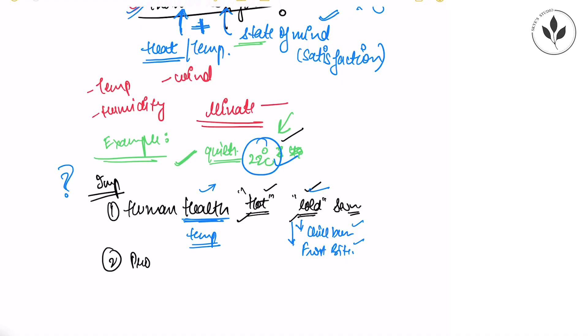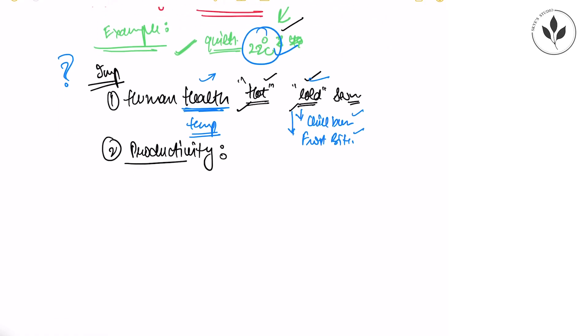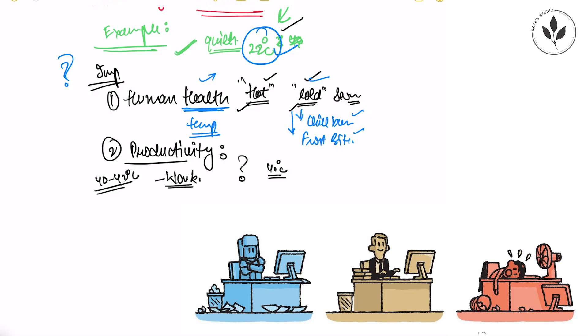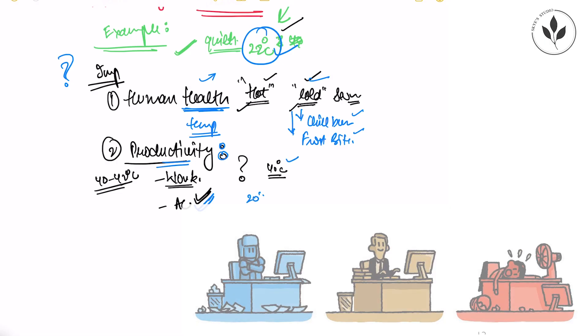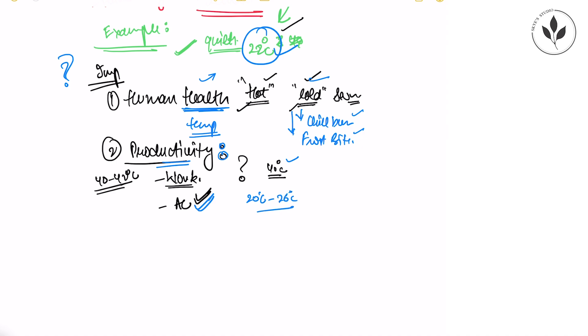Second point is productivity. How does thermal comfort affect productivity? Let's say the temperature all around in your area is around 40 to 42 degrees Celsius, and you are going to work in your office, and there's no electricity. So will you be able to work in that 40 degrees Celsius temperature? No, until you switch on the AC, you will not be able to work comfortably in your office. That means my productivity will be lower if I don't have proper temperature inside my room.